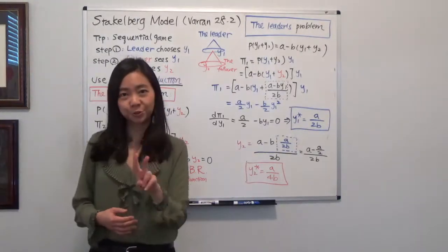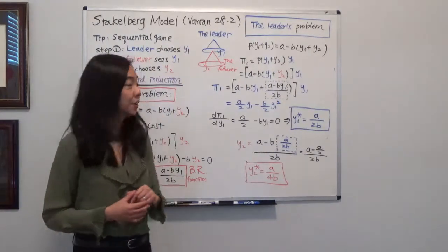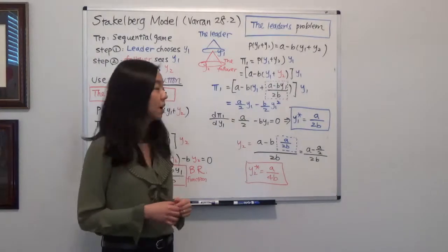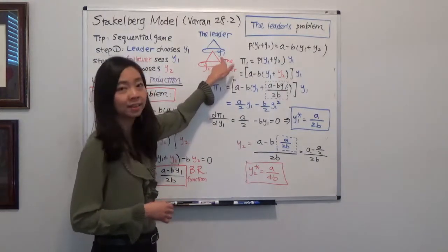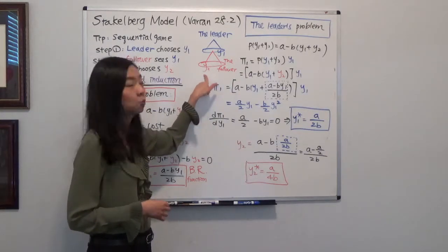So here we have a duopoly, two firms with one leader and one follower. The leader is going to determine its quantity Y1, then the follower is going to observe Y1, then decide how much the follower itself wants to produce, which is Y2.